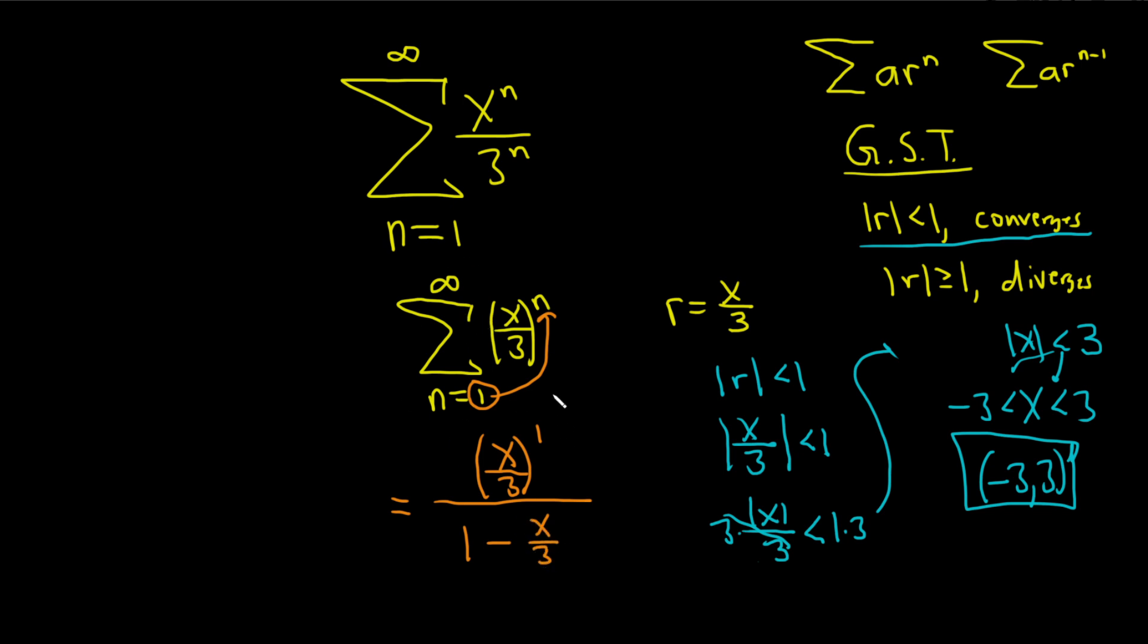So this infinite sum is equal to this function whenever x is a number between negative 3 and 3. So we're taking the sum and writing it as a function, which is a really interesting concept. This can be simplified, and I think maybe the easiest way is to do something like this. Multiply by 3 over 3.